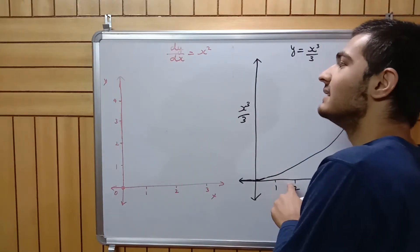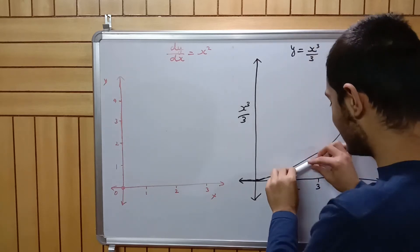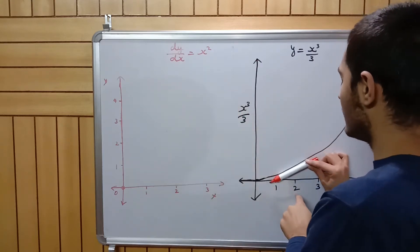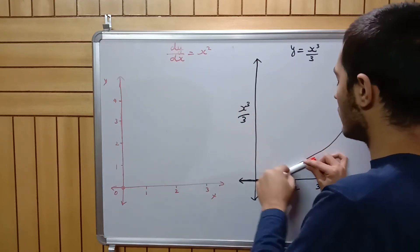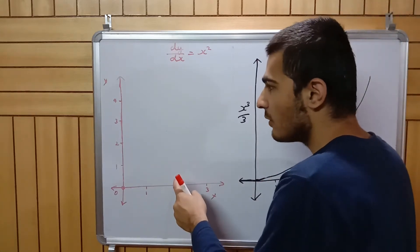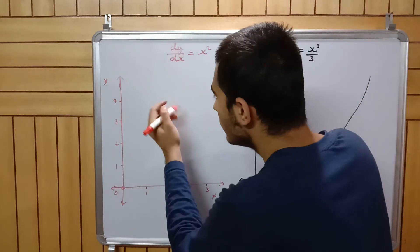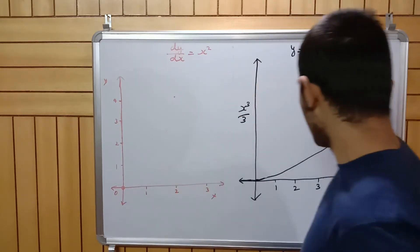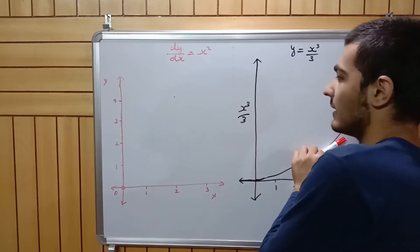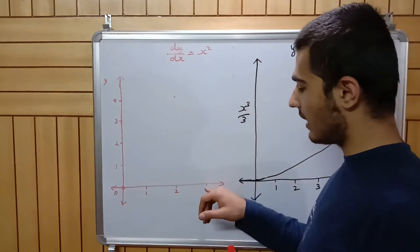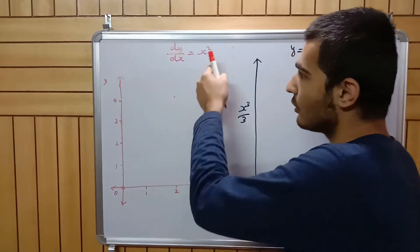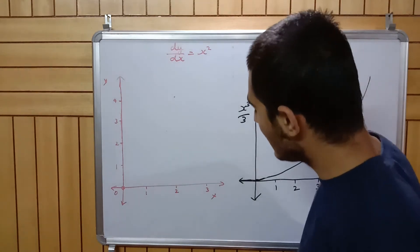The slope of the tangent at x equals two is the square of the x-value: two squared is four. So at x equals two I plot a slope of four. Similarly, at x equals three, the slope of that tangent is three squared, which is nine, but I can't plot nine here because it goes off the board.